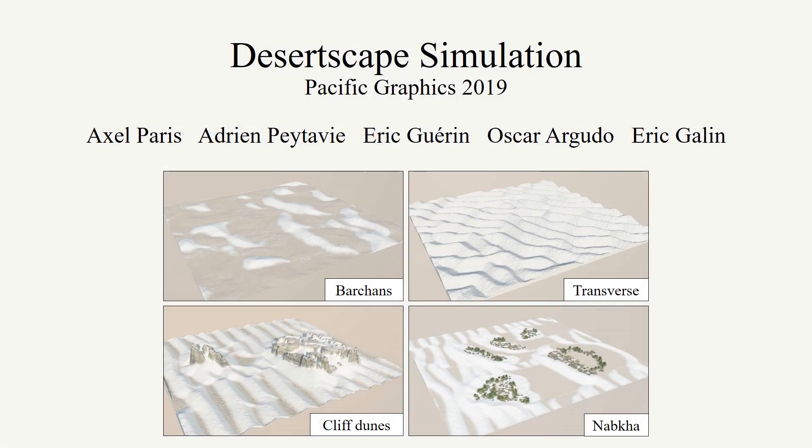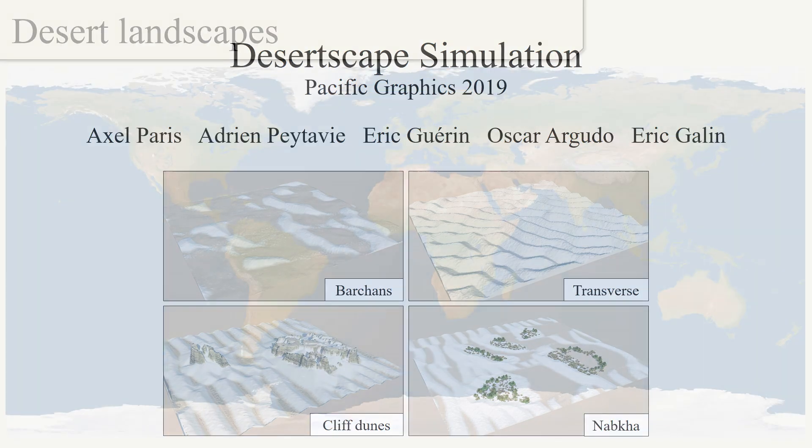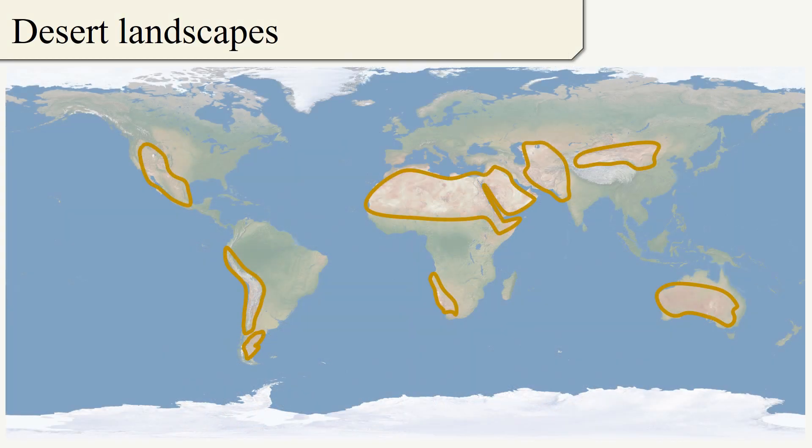We present a novel method for authoring desert landscapes, allowing users to easily reproduce the variety of features typically found in deserts. Arid landscapes cover about 25% of Earth's landmass, yet they have received little attention in computer graphics.